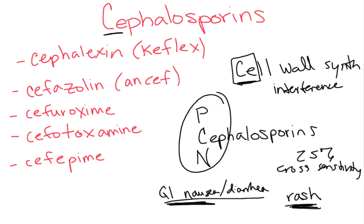The way to remember which drugs are in the cephalosporin class is that they all start with 'CEPH.' Examples include cephalexin, cefuroxime, cefotaxime, and cefepime — there are more, but they all start with CEPH for cephalosporin.